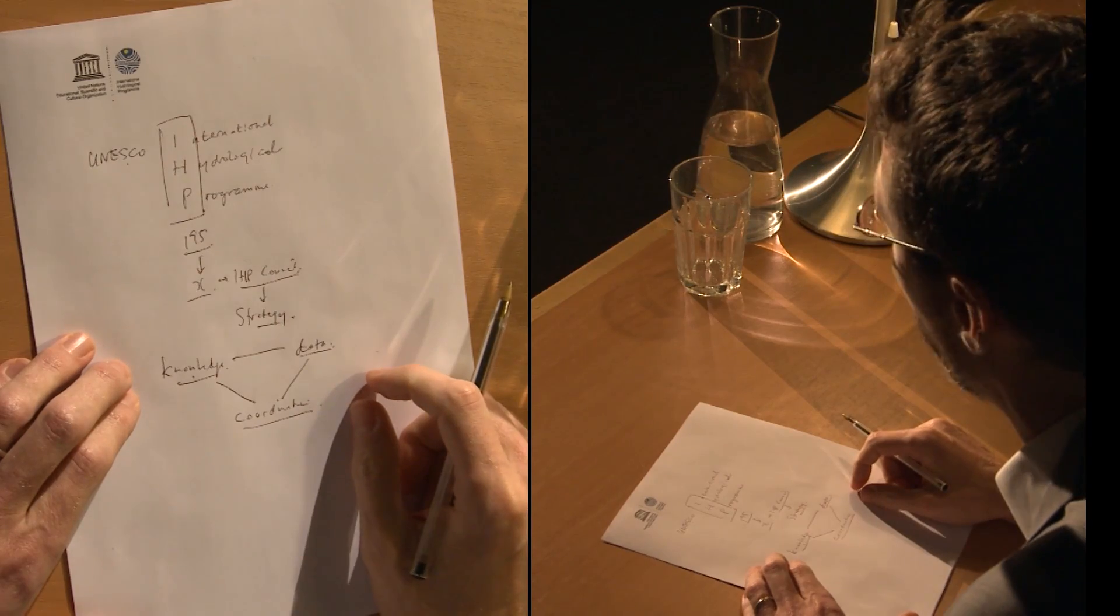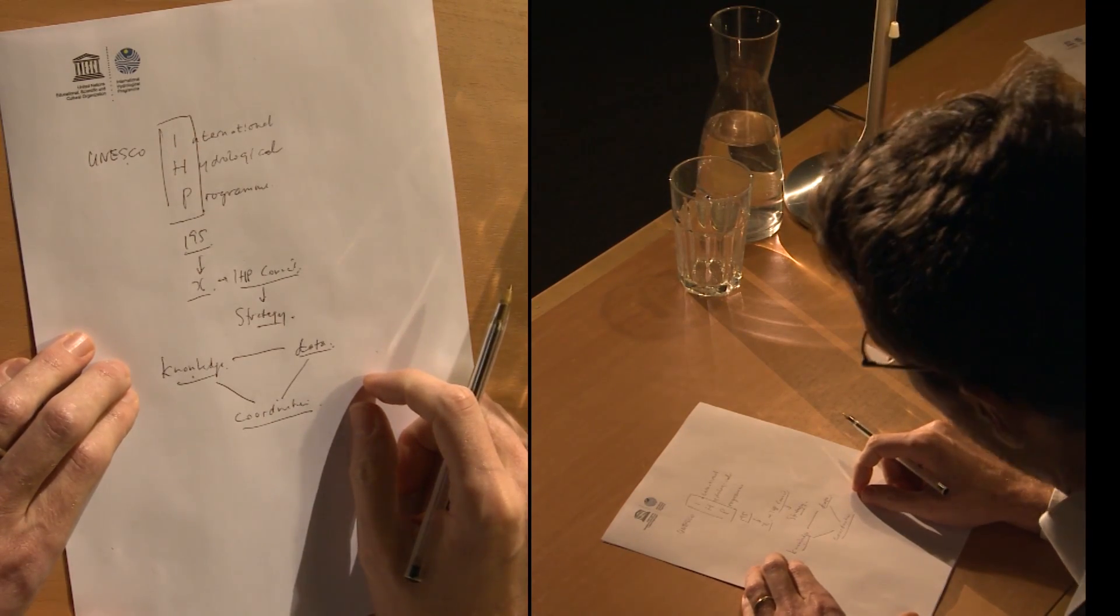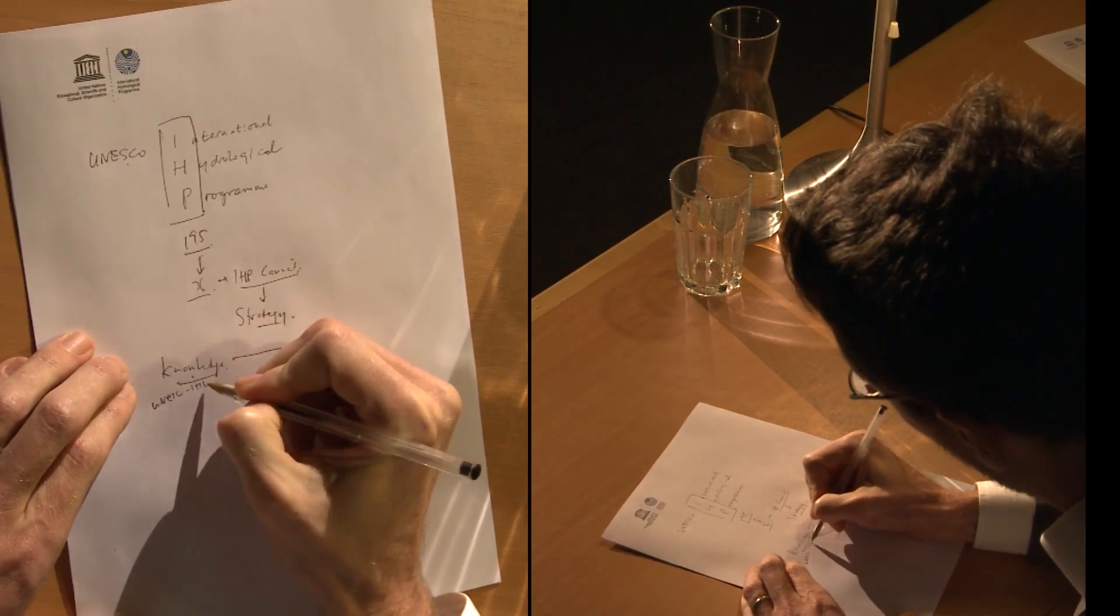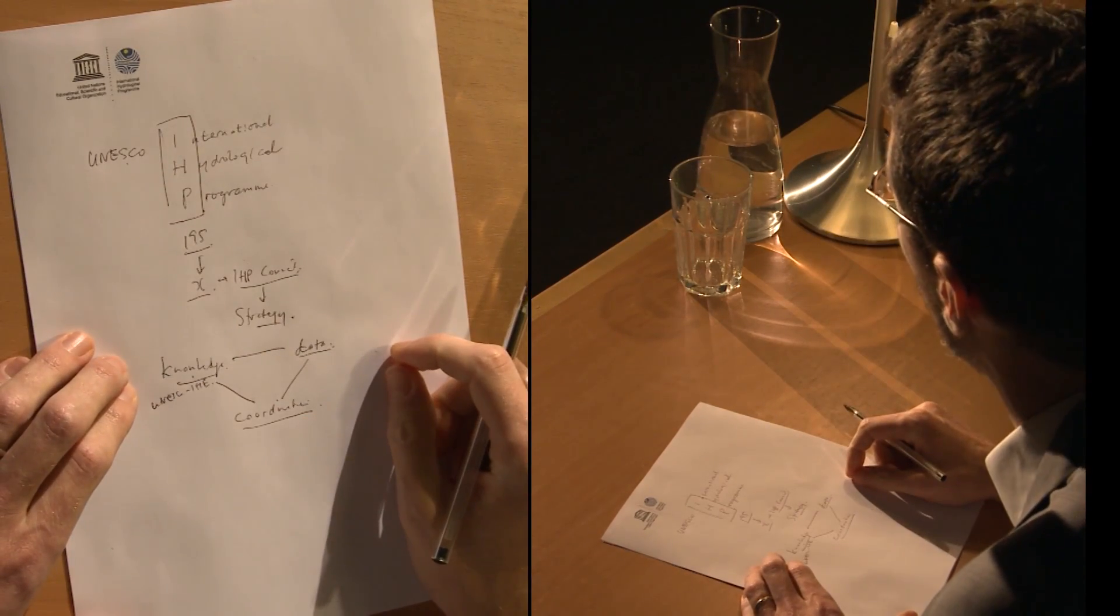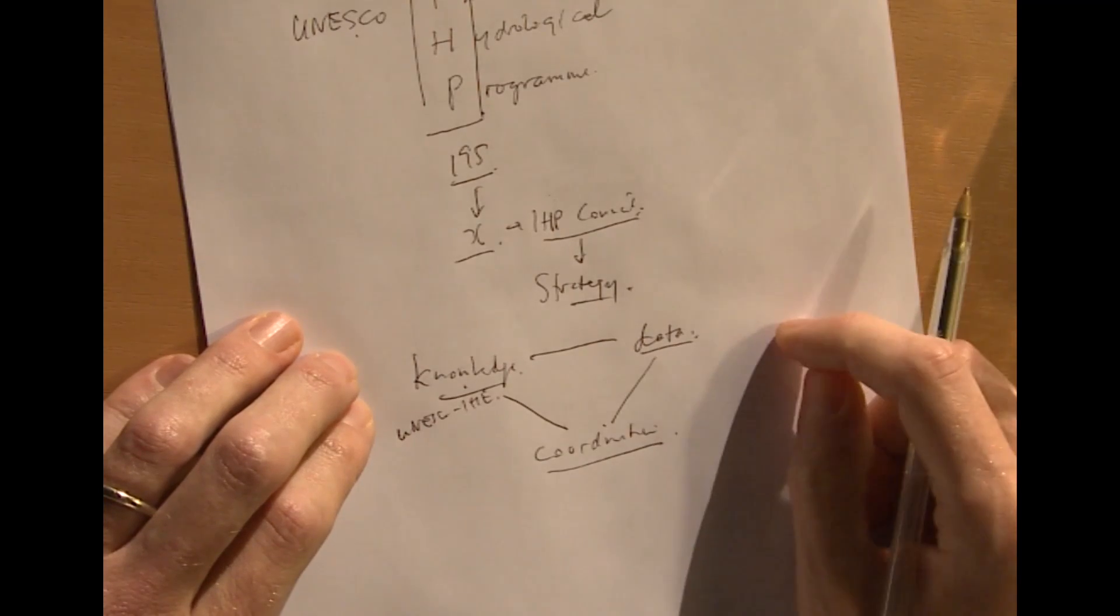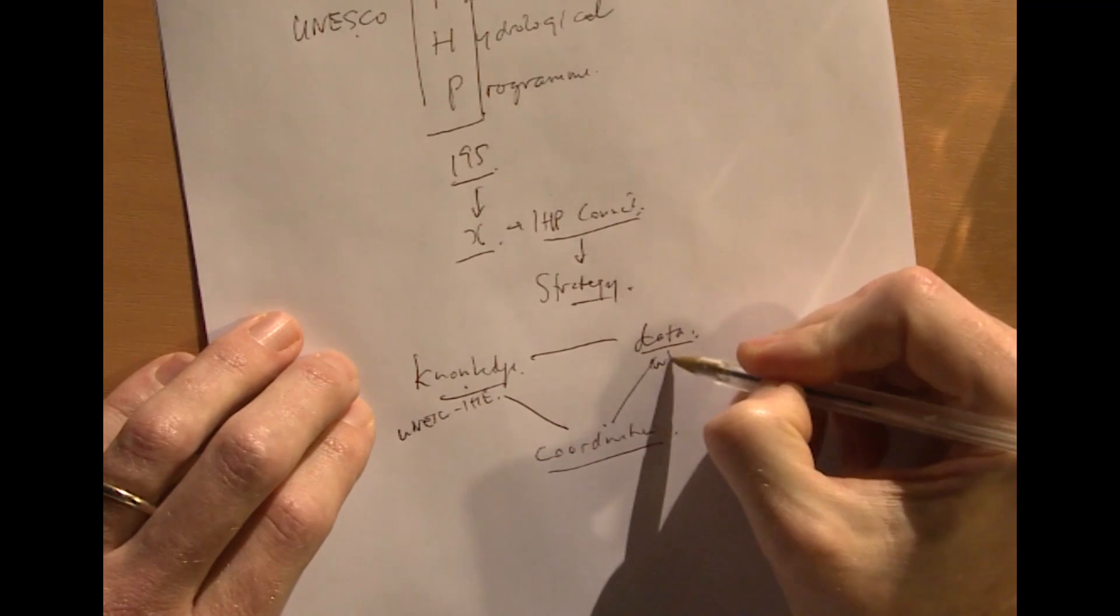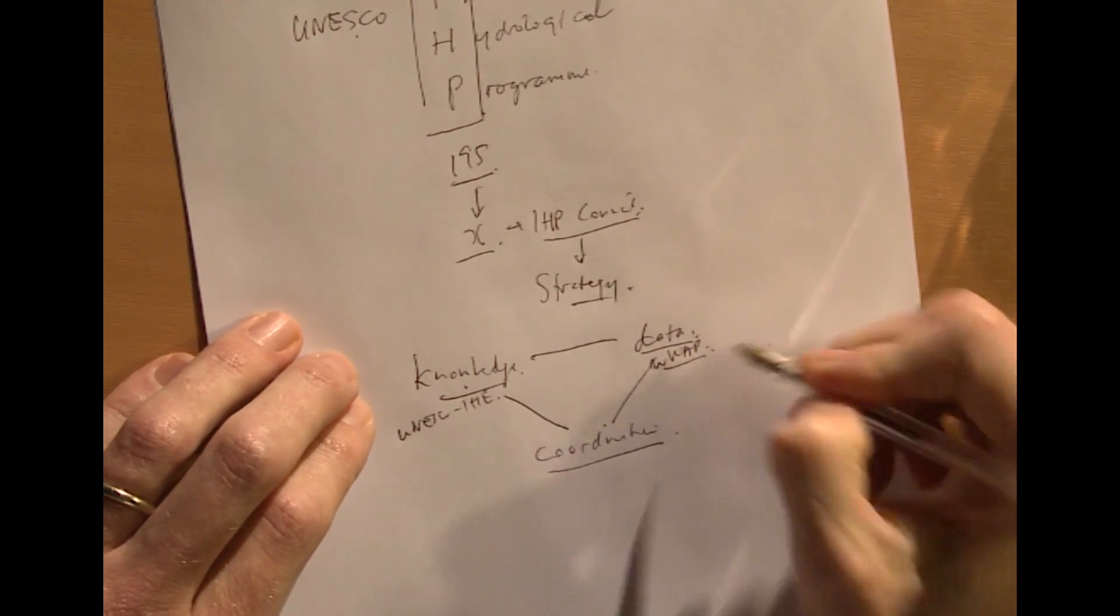The knowledge is generated by UNESCO's water family, and in part by the UNESCO IHE Institute for Water Education in Delft. The data are collected and generated in Italy, in Perugia.